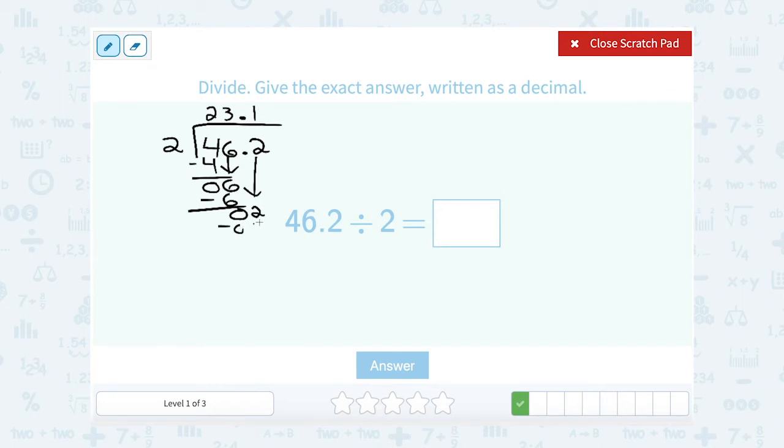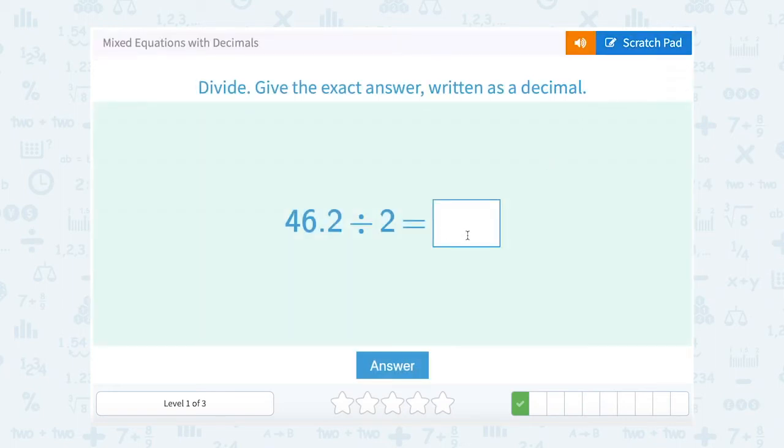And of course, you can subtract the 2 to show that you have 0 remainder here. So 23.1.